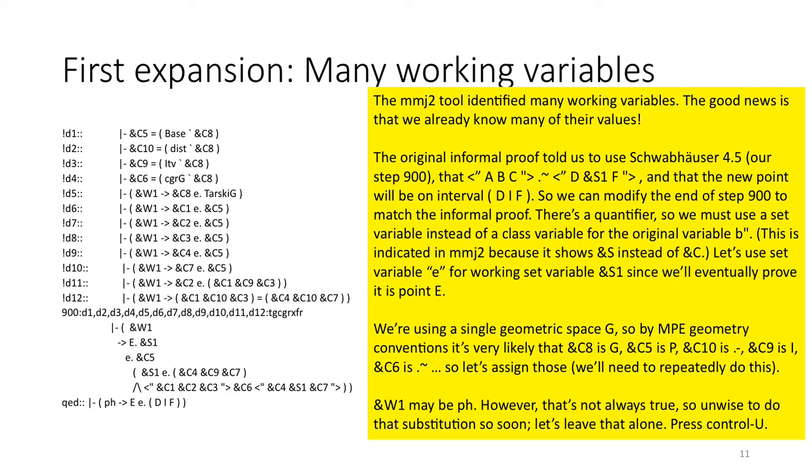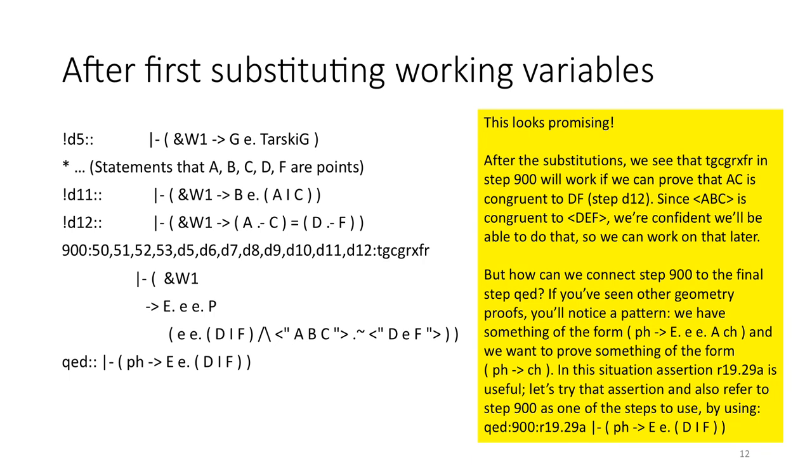This looks promising. After the substitutions, we see that TG CGR XFR in step 900 will work if we can prove that AC is congruent to DF. That's this new statement D12. Since ABC is congruent with DEF, we're confident we'll be able to do that, so we can work on that later. But how do we connect step 900 to the final step QED? If you've seen other geometry proofs, you'll notice a pattern. We have something of the form PH implies there exists an E where E is a member of A and some CH, and then we want to prove something of the form PH implies CH. In this situation, assertion R19.29A is really useful. So let's try that assertion and also refer to step 900 as one of the steps to use by using QED colon 900 colon R19.29A.